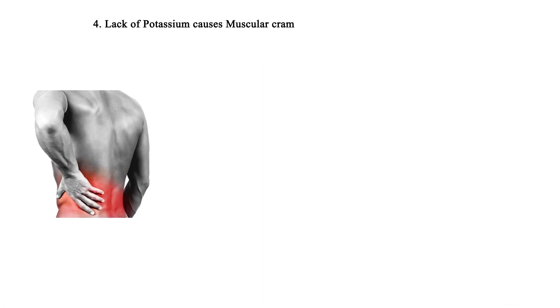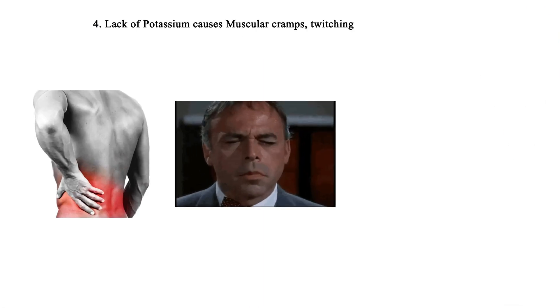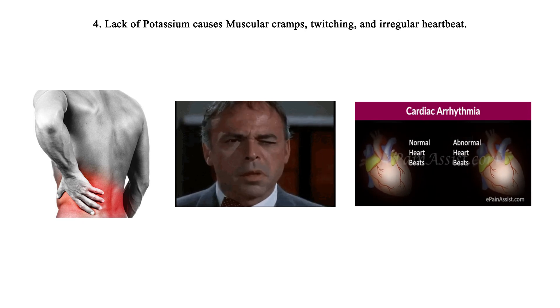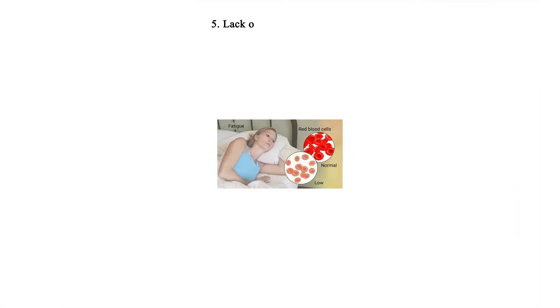4. Lack of potassium causes muscular cramps, twitching, and irregular heartbeat. 5. Lack of iron causes anemia.